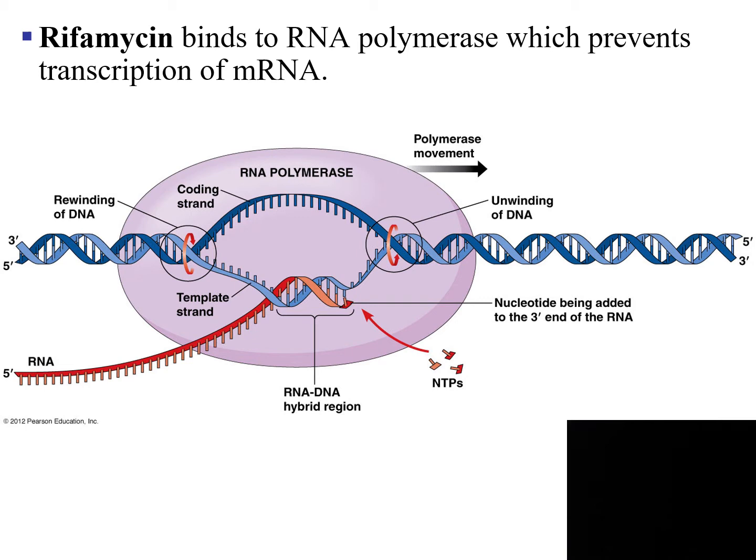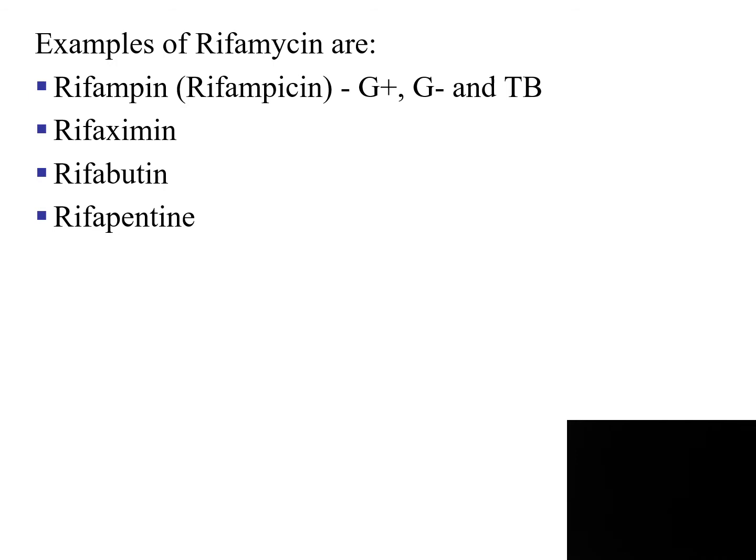Rifamycin is going to bind to the RNA polymerase, and RNA polymerase makes the messenger RNA. Therefore, rifamycin inhibits mRNA formation. Examples of rifamycin are listed in this slide.